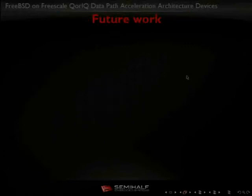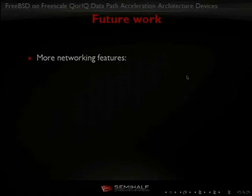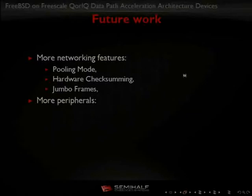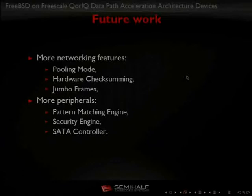The to-do list includes more networking features like polling mode, hardware checksum offloading, and jumbo frames. We also want more peripherals like the pattern matching engine, security engine, and SATA controller.